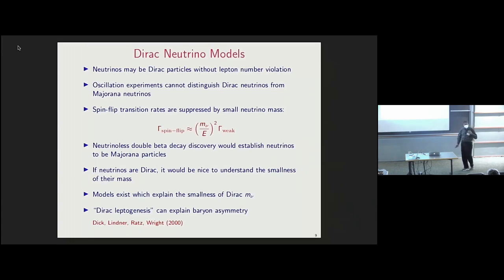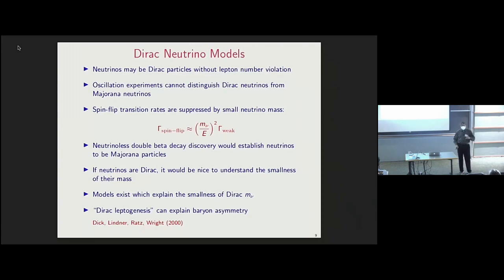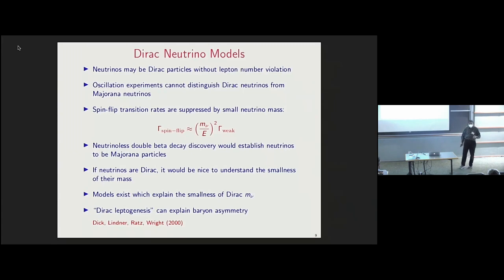Regarding baryon asymmetry generation with Dirac neutrinos, there is a mechanism called Dirac leptogenesis suggested by these authors. Even when lepton number is conserved, one can generate a left-handed lepton asymmetry and a right-handed lepton asymmetry separately. The left-handed lepton asymmetry is washed out by the sphaleron process, whereas the right-handed asymmetry survives, provided the left–right transition is suppressed. For a Dirac neutrino this is ideal, because the mass flip does not bring the right-handed neutrino into thermal equilibrium in the early universe.